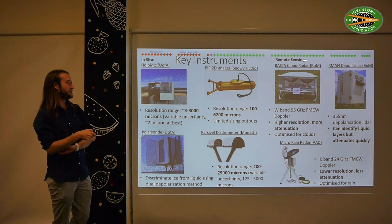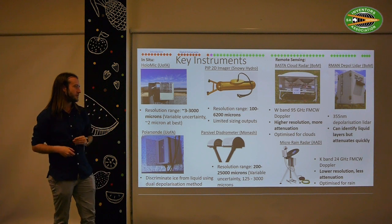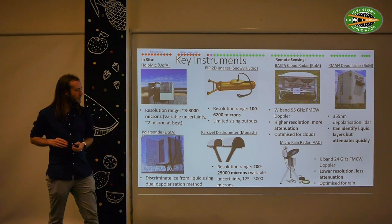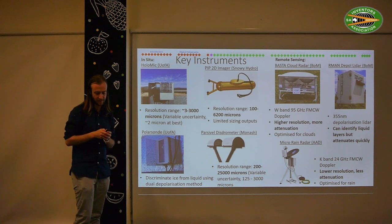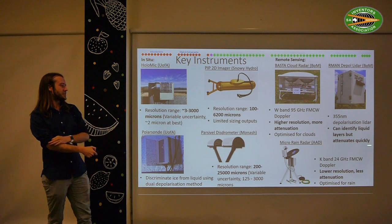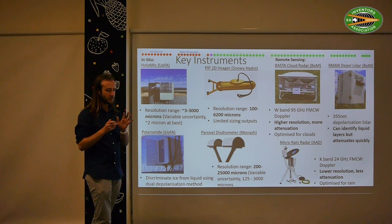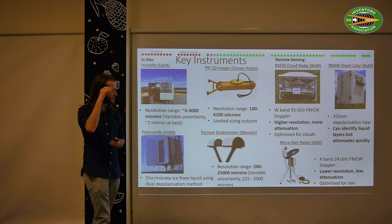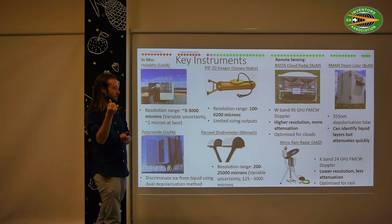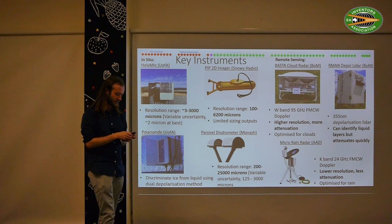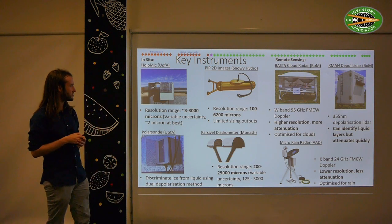On the remote sensing side, we deployed a 95 GHz cloud radar from the Bureau of Meteorology. Its high frequency gives high resolution, but with significant attenuation — not well suited for rain, but very high resolution for clouds. We also had a 24 GHz micro rain radar from the Antarctic Division — lower resolution but much better suited for rain measurements. We also deployed a lidar, which shoots optical light into the clouds and is very good at discriminating spherical water droplets from ice crystals, though it is quickly attenuated in clouds. By deploying them together we can get a unique understanding of the physics.